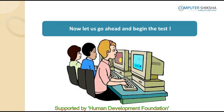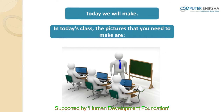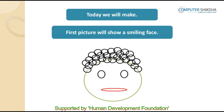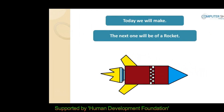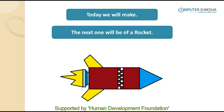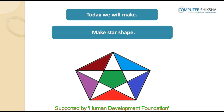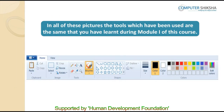Let us go ahead and begin the test. In today's class, the pictures that you need to make are: first picture will show a smiling face, the next one will be of a rocket, and in the third image, with the help of the text tool, you have to write down something about yourself and also make four stars. In all of these pictures, the tools which have been used are the same that you have learnt during module 1 of this course.